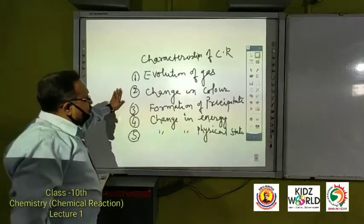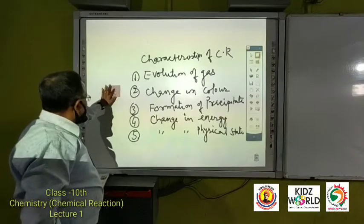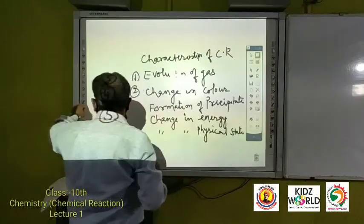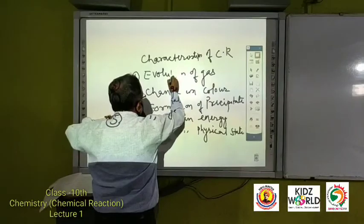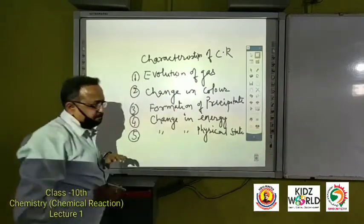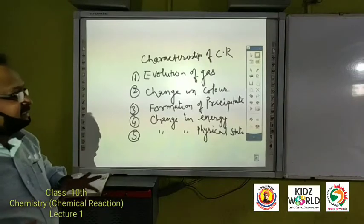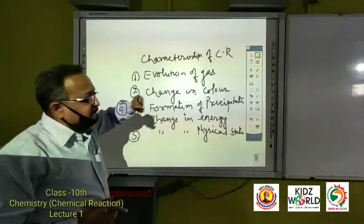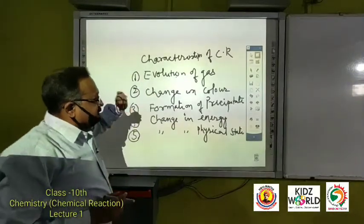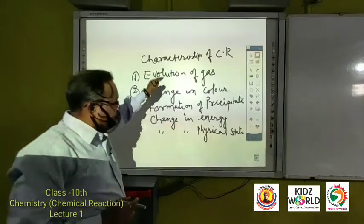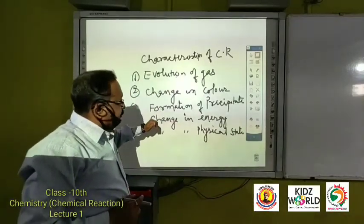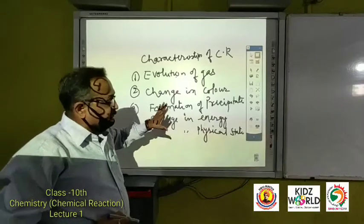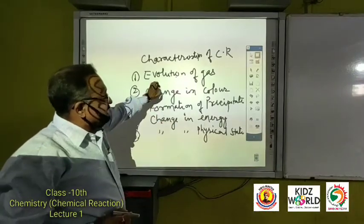So this first one is evolution of gas, when any chemical reaction takes place. We can say while talking about the characteristics of chemical reaction, that any reaction which will show these properties or some properties from here, then that reaction will be called a chemical reaction.